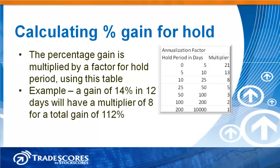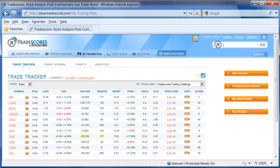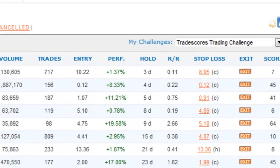The first thing we need to calculate is the percentage gain in consideration of the hold period. Percentage gain is relatively simple — how much did your position change in percentage terms? But we must multiply that by an annualization factor to get the total percentage gain. For example, if the stock that you trade earned a gain of 14% in 12 days, looking up the hold period on the annualization factor table reveals a multiplier of 8. 14% times 8 is a total gain of 112%. The percentage gain and hold period are shown in the Trade Tracker — percentage gain is under PERF for performance.